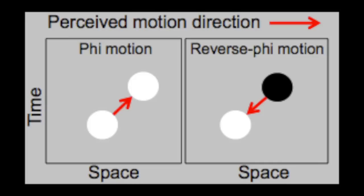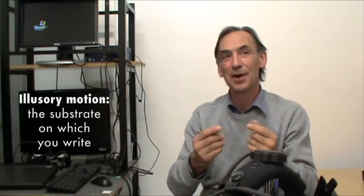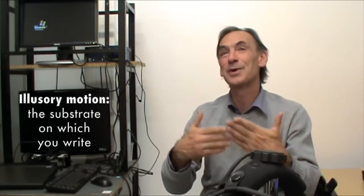So to make it clear, phi motion is what you see when you go to the movie. Reverse phi is what you would see if the images would change their contrast over time. In normal life, in everyday life, you do everything you can to suppress the perception of those motions which go in the wrong direction. But there, you want to look at them, you want to see them, you want to select those illusory motions, this illusory motion, and it's going to be the substrate on which you write.